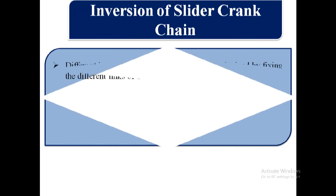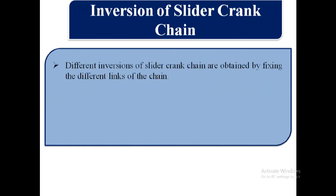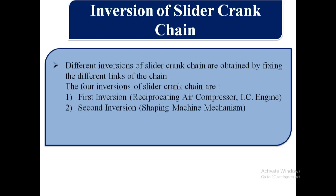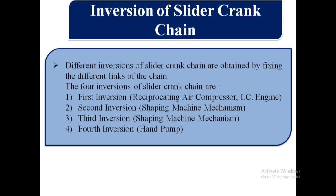Now we will see inversions of slider crank chain. Different inversions are obtained by fixing the different links of the chain. The four inversions of slider crank chain are: first inversion — reciprocating air compressor and IC engine; second inversion — shaping machine mechanism; third inversion — shaping machine mechanism; and fourth inversion — hand pump. Now we will see each one in detail.